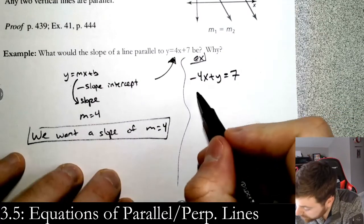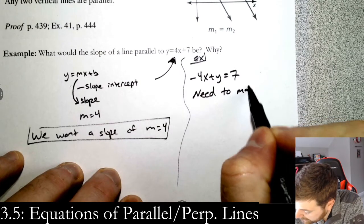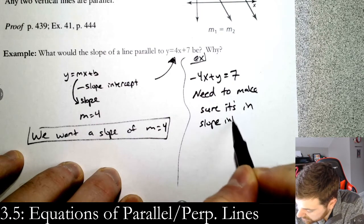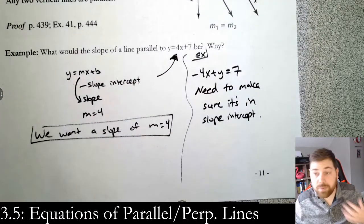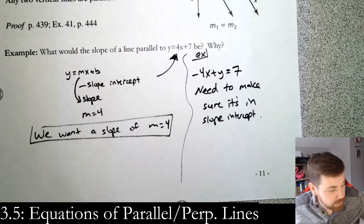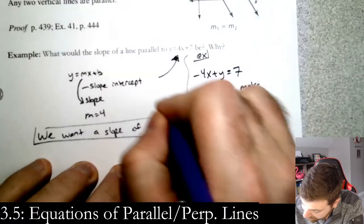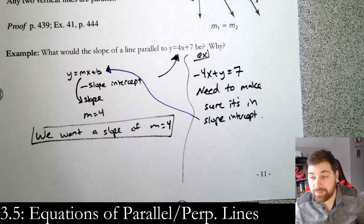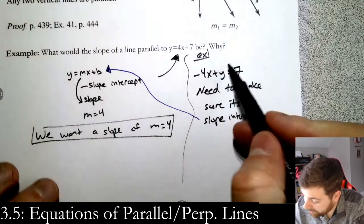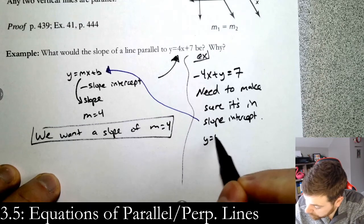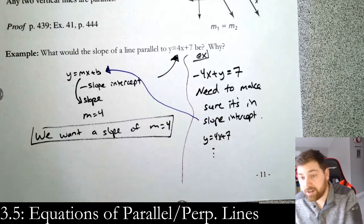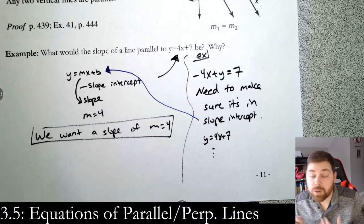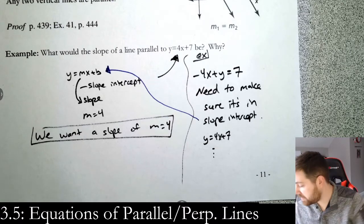So it has to be y equals something x plus b, this form right here. Get it in this form before you read off the slope, or you're going to be in a world of trouble. All you would do is add the 4x over, and you get y equals 4x plus 7, then work from there. That's my big warning: make sure it's in slope intercept form. But once you have it, parallel lines have the same slope.